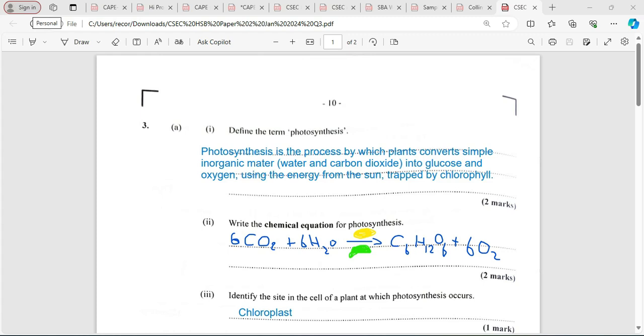The first question requires us to define the term photosynthesis. Photosynthesis is a process in which plants convert simple inorganic materials such as water and carbon dioxide into glucose and oxygen. It uses the energy from the sun which is trapped by chlorophyll.